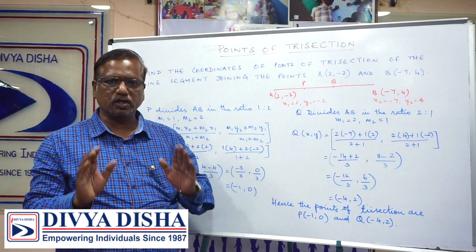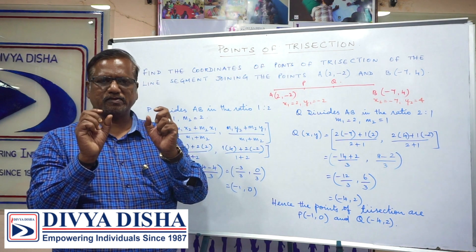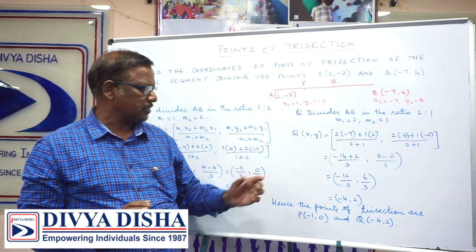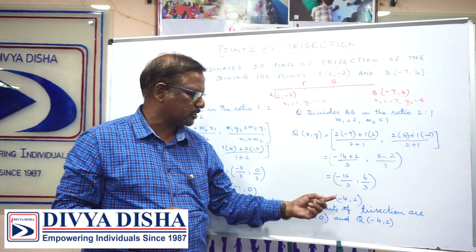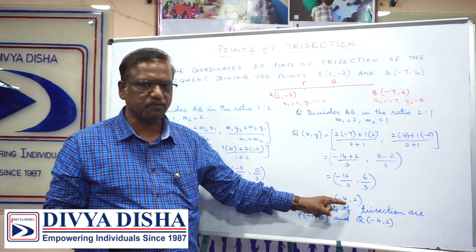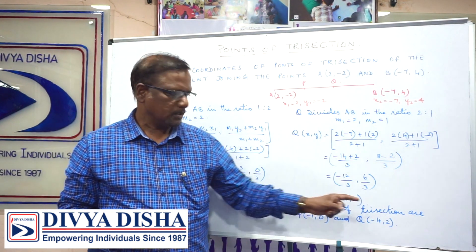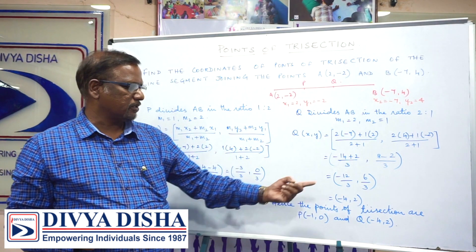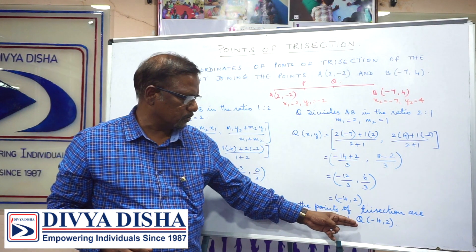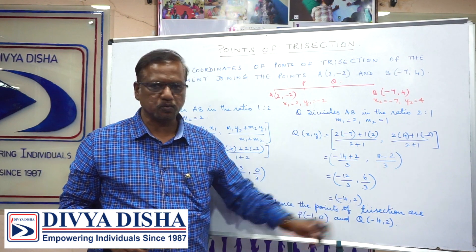Our job is to do a little bit of a trick and just make the calculation. After finishing the calculation, on simplifying we get -4, 2. Therefore the points of trisection are P(-1, 0) and Q(-4, 2).